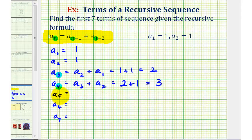To find the fifth term, n equals five. So we'd have a sub five minus one is four, plus a sub five minus two is three. The fifth term is the sum of the fourth and third term, three plus two, which equals five.